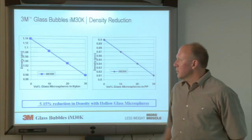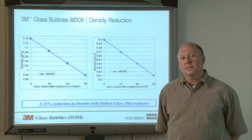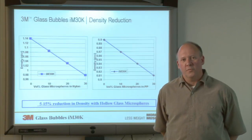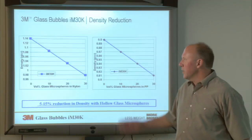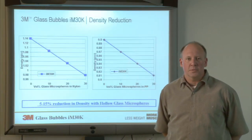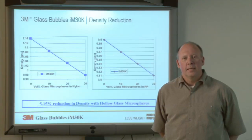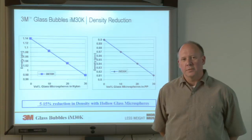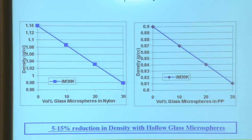On the y-axis, we show the density of the resin by itself: nylon at 1.14 and polypropylene at 0.9 grams per cc. As we increase the volume percent of glass bubbles, we can reduce the density. For example, in nylon, we've reduced the density to 0.98 as we've added 30 volume percent of glass bubbles.